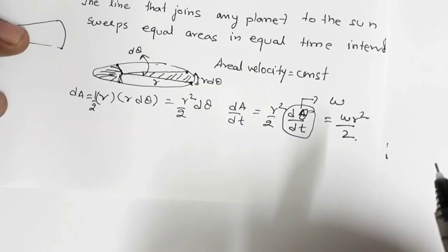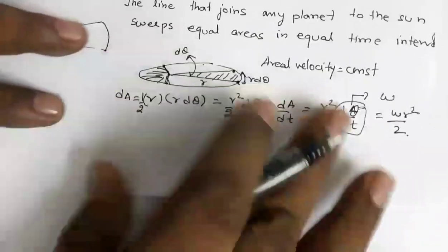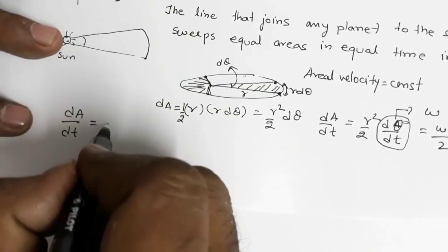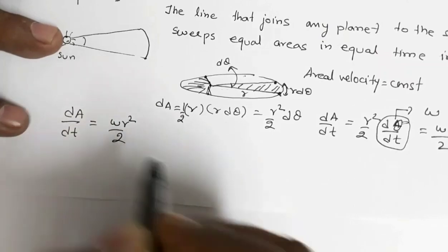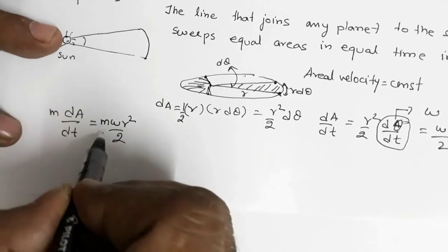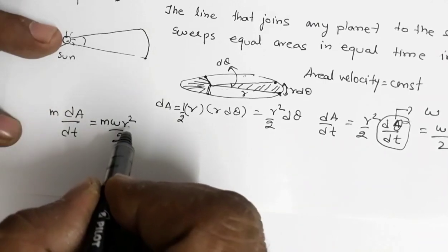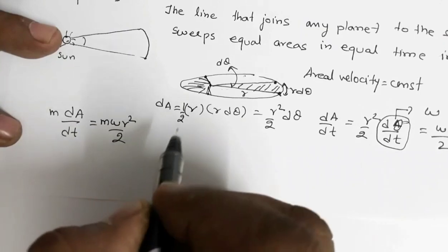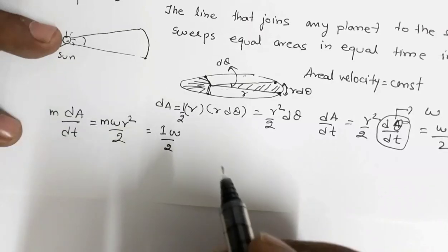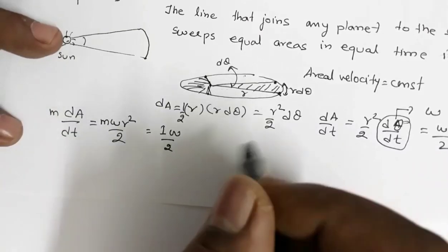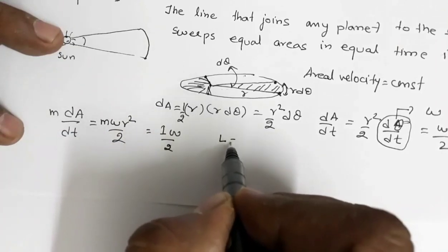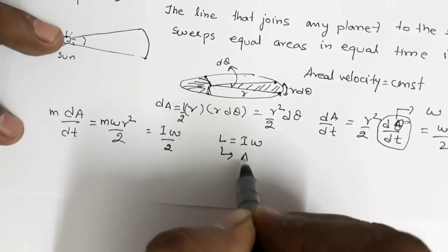Now dθ/dt — the rate of change in angular displacement — is the angular velocity ω. So dA/dt = (r²/2)·ω. Multiplying and dividing by mass m, we get dA/dt = (mr²·ω)/(2m). Now mr² is the moment of inertia I, so this becomes I·ω divided by 2m. But I·ω is the angular momentum L. So dA/dt = L/(2m).